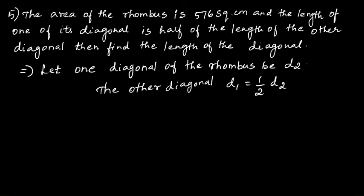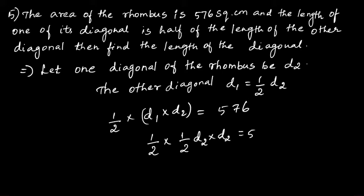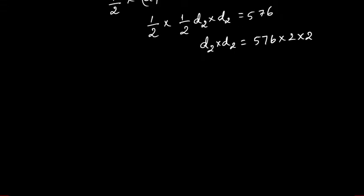Write the area of the rhombus formula: 1 by 2 into d1 into d2 equals 576. So 1 by 2 into d1 value is half of d2. You will get d2 into d2 equals 576 into 2 into 2. When you multiply the numerals you will get 2304, which is your d2 square value.